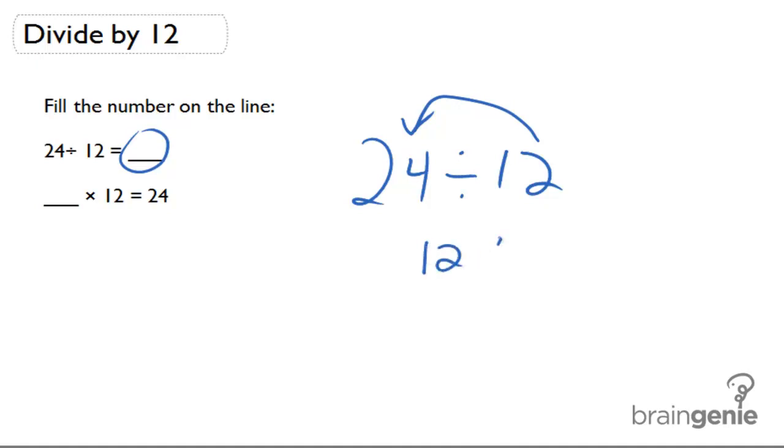So 12 times 2 actually equals 24. We know that they're actually 12 plus 12. So 12 two times is going to give me 24. So the answer to this one is 2.